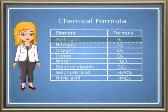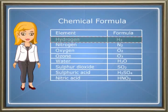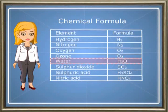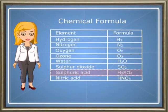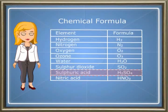In H2, H stands for a molecule of hydrogen consisting of two hydrogen atoms. H2O stands for a molecule of water consisting of two atoms of hydrogen and one atom of oxygen. In another example, H2SO4 stands for one molecule of sulphuric acid which contains two atoms of hydrogen, one atom of sulphur, and four atoms of oxygen.